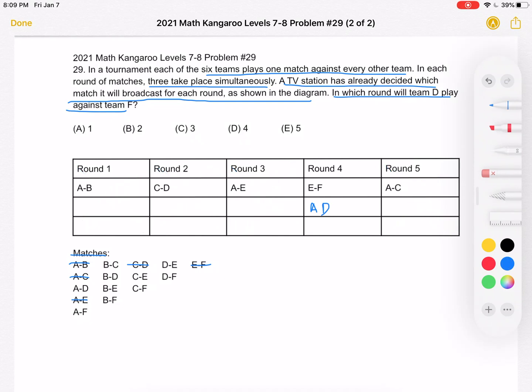And for the rest of the problem, we're going to continue with this sort of logic. So where does that mean A,F happens? Well, it must happen in round two because in all the other rounds - round one, round three, round four, and round five - A is already playing, and A can't play in two matches in the same round.